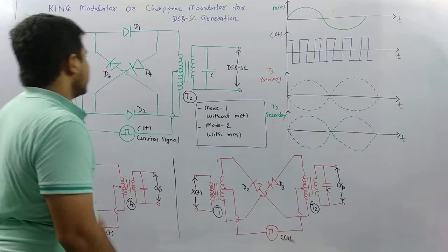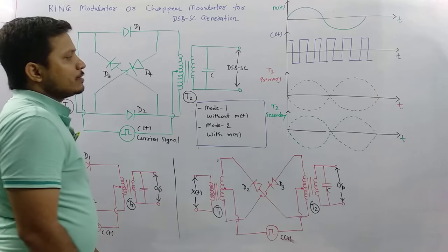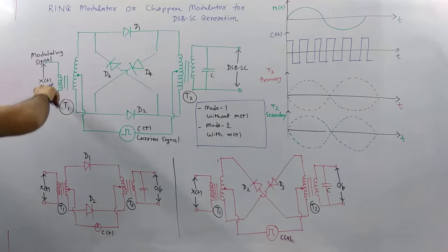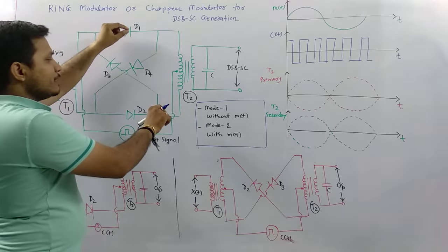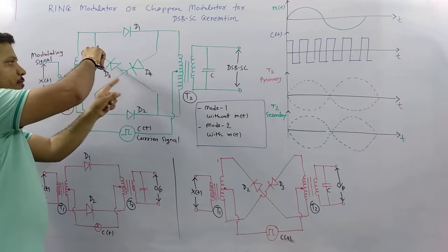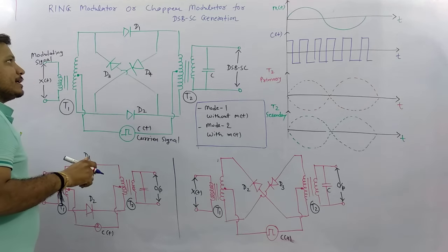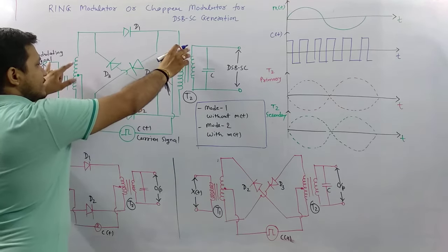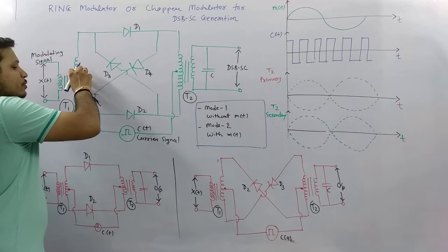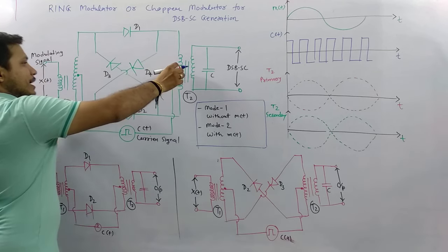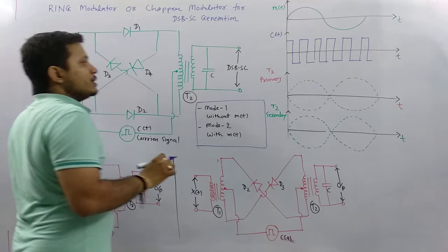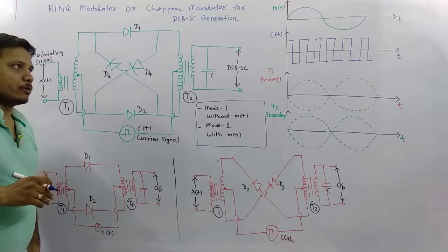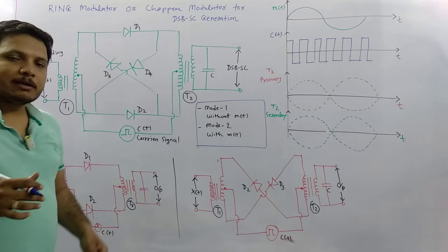Let us begin with the basic circuit. For DSBSC generation by ring modulator, the circuit has a primary winding with the modulating signal at its input. There are four diodes connected — two from anode to cathode and two from cathode to anode with cross connection. Two center-tap transformers are used, and the carrier signal is connected at the center tapping. At the output side of transformer T2 we get the DSBSC output.